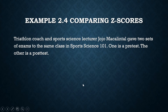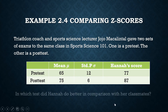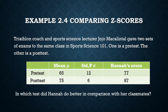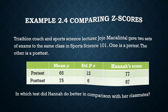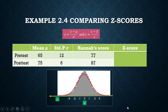A coach and lecturer, Giorgio Macalintal, gave two sets of exams to the same class in Sports Science 101 — a pre-test and a post-test. This is the result for one student, and in which test did Hana do better in comparison with her classmates? Let us use the Z-score to answer this question. The equivalent Z-score of 77 is 1, and for 87 it's 2.